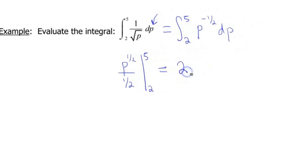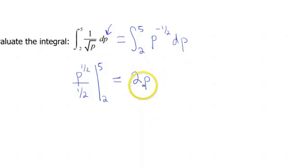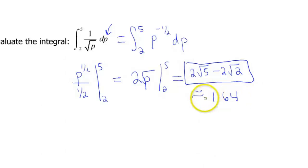I'm evaluating this from 2 to 5. And if we pretty that up a little bit, that's 2 square root of p from 2 to 5. So then that's going to give us 2 square root of 5 minus 2 square root of 2. Can't really do much with those. But if you want that to be an approximate value, that gives us about 1.64.